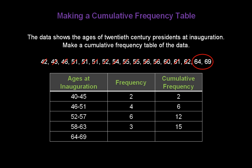And finally, how many presidents were inaugurated between 64 and age 69? That would be the last 2 in our data. So, we're going to take the 15, add it to the 2, and get 17. And we can always check ourselves with the cumulative frequency table because the 17 down at the bottom should match the total number of data points we started with.